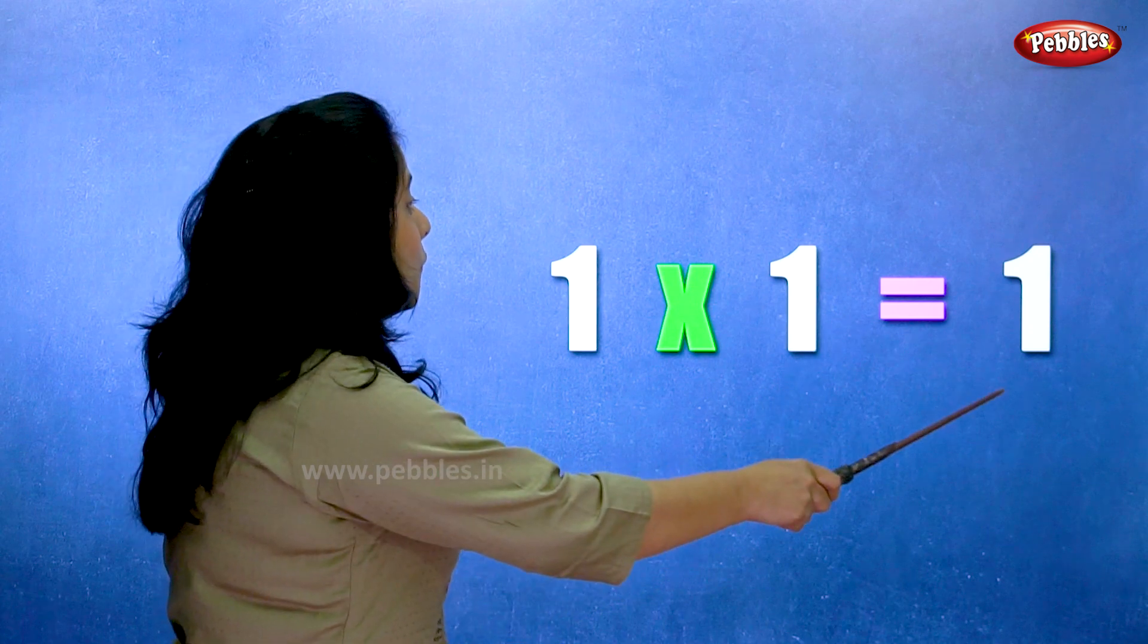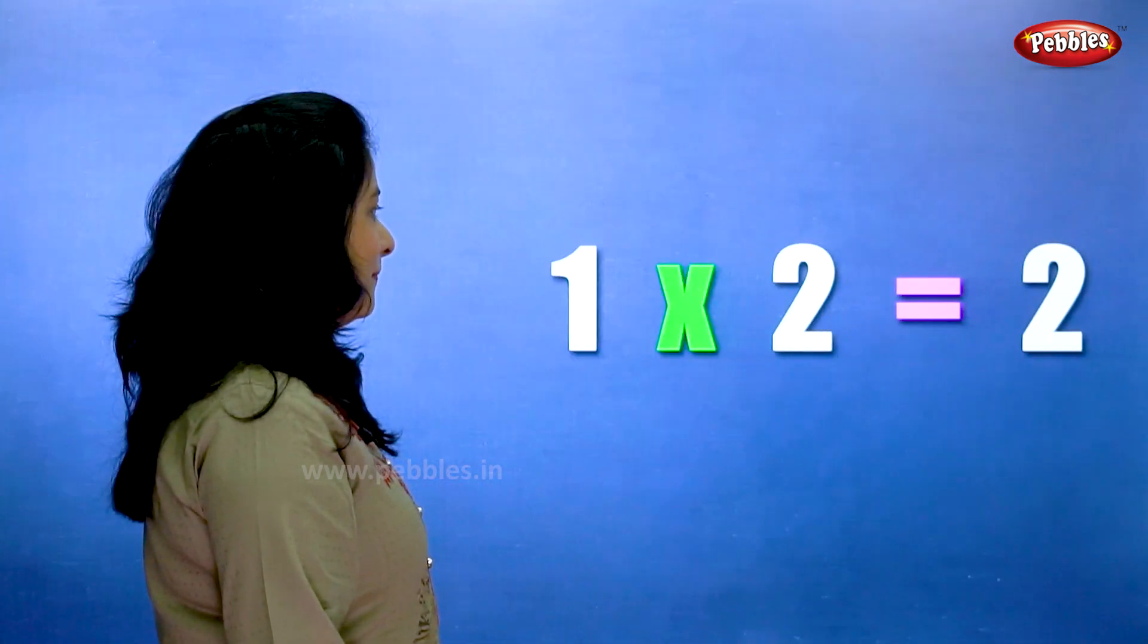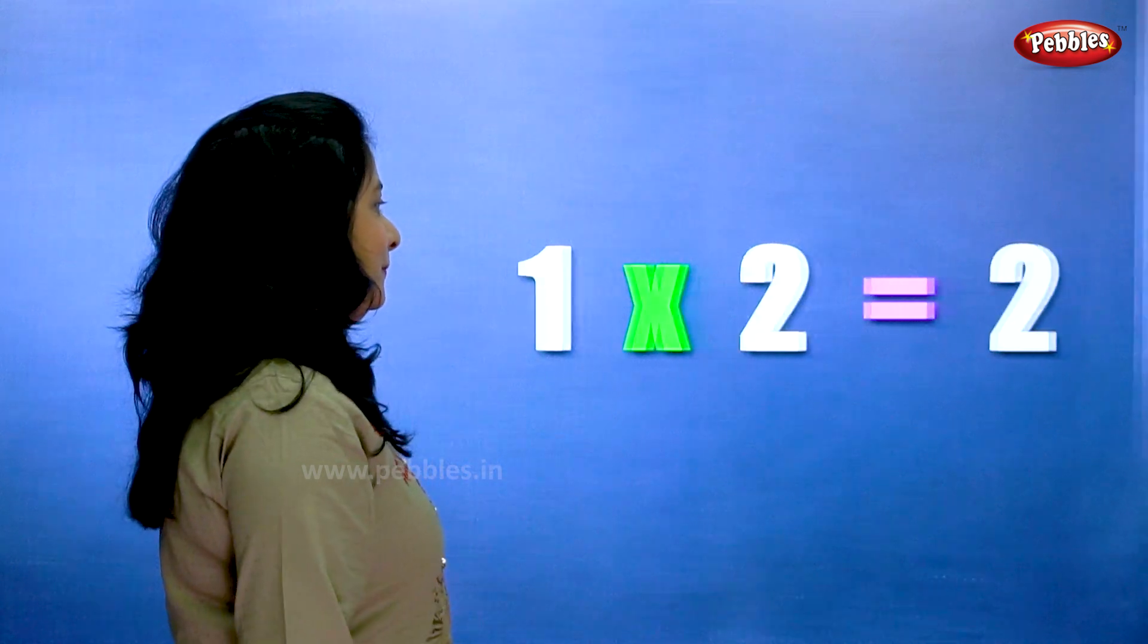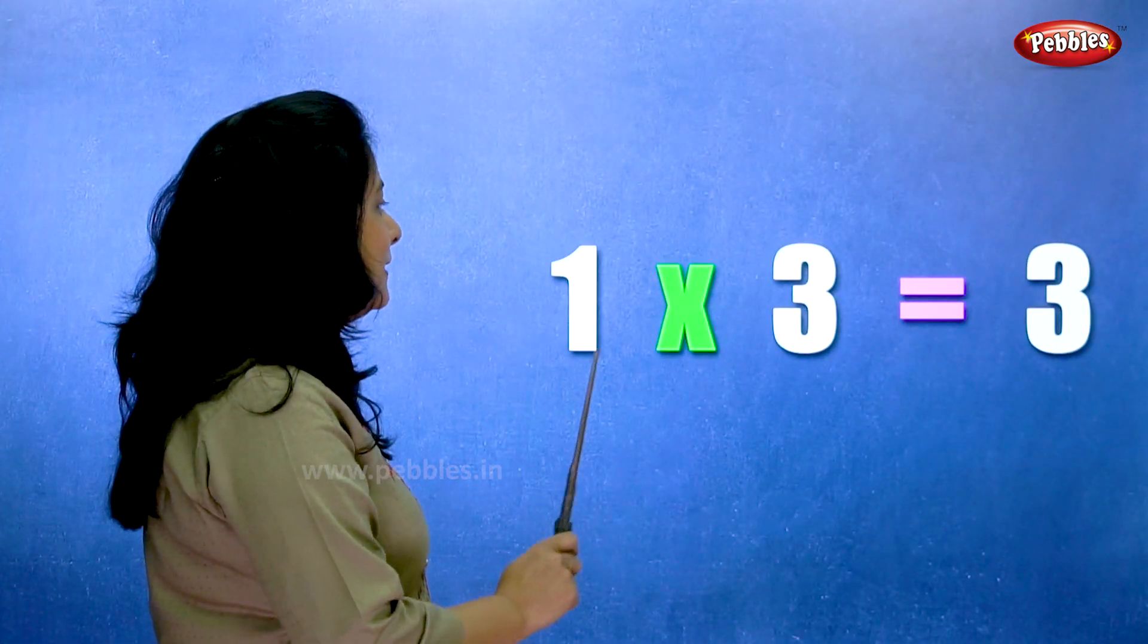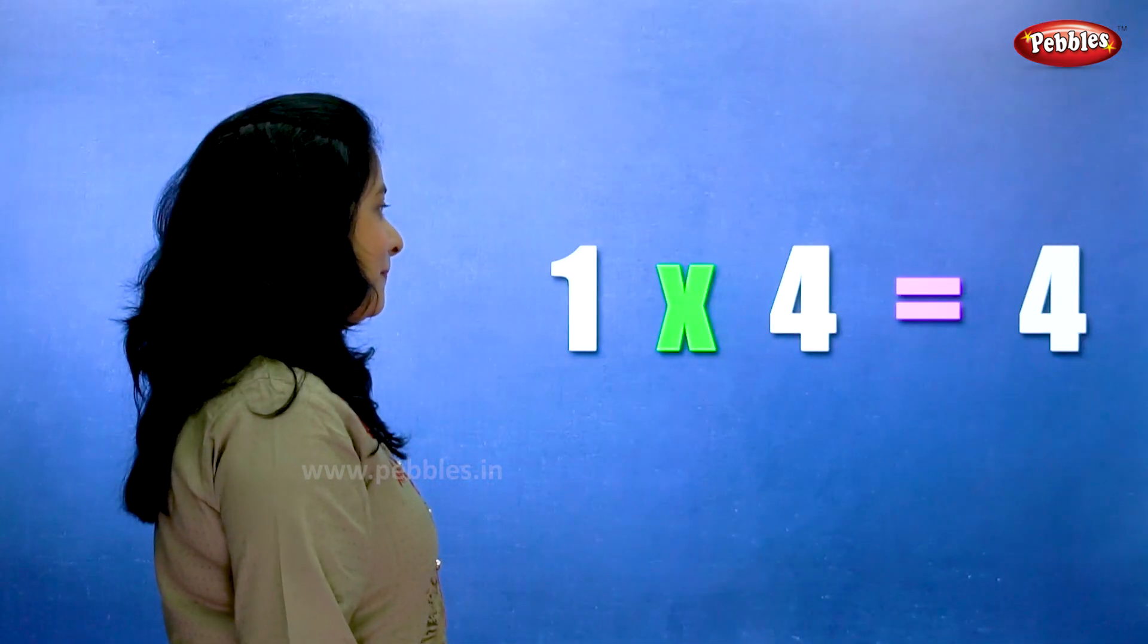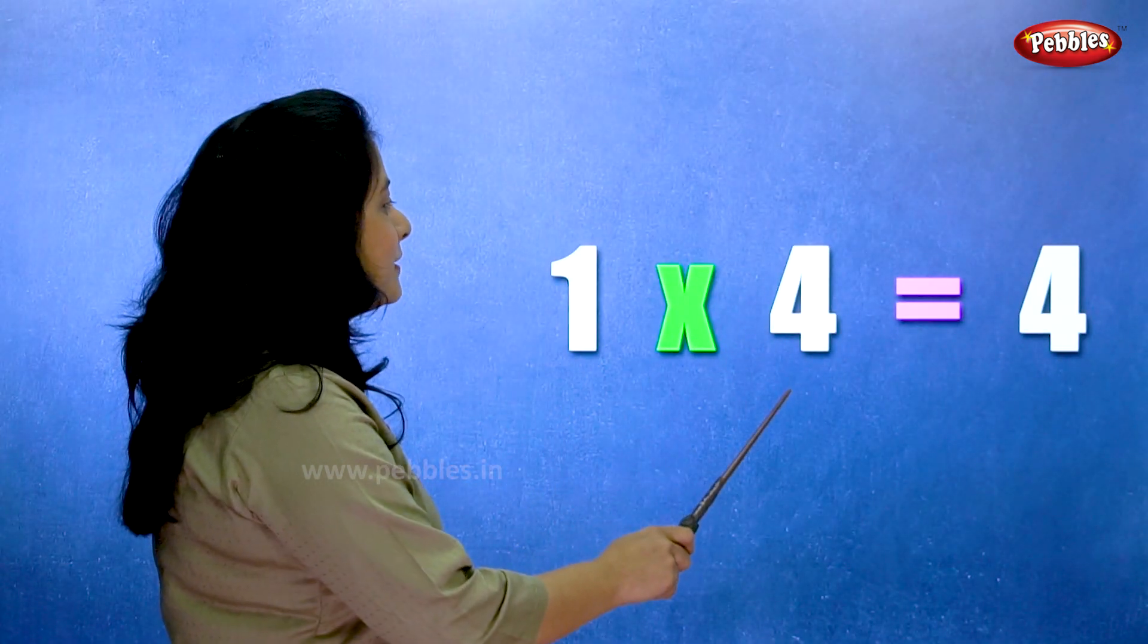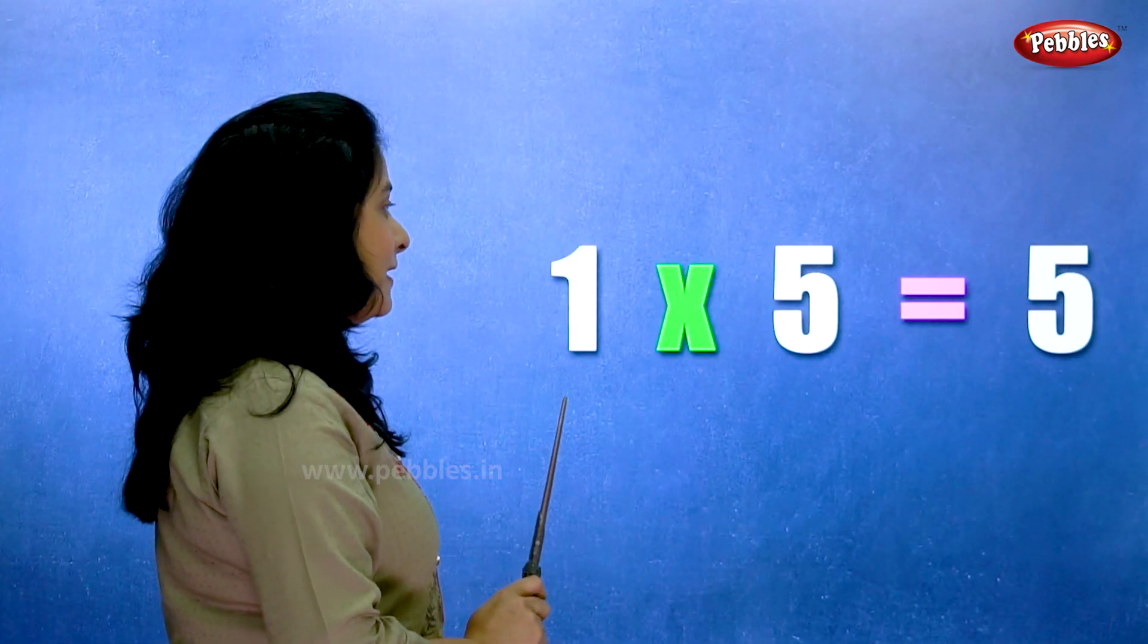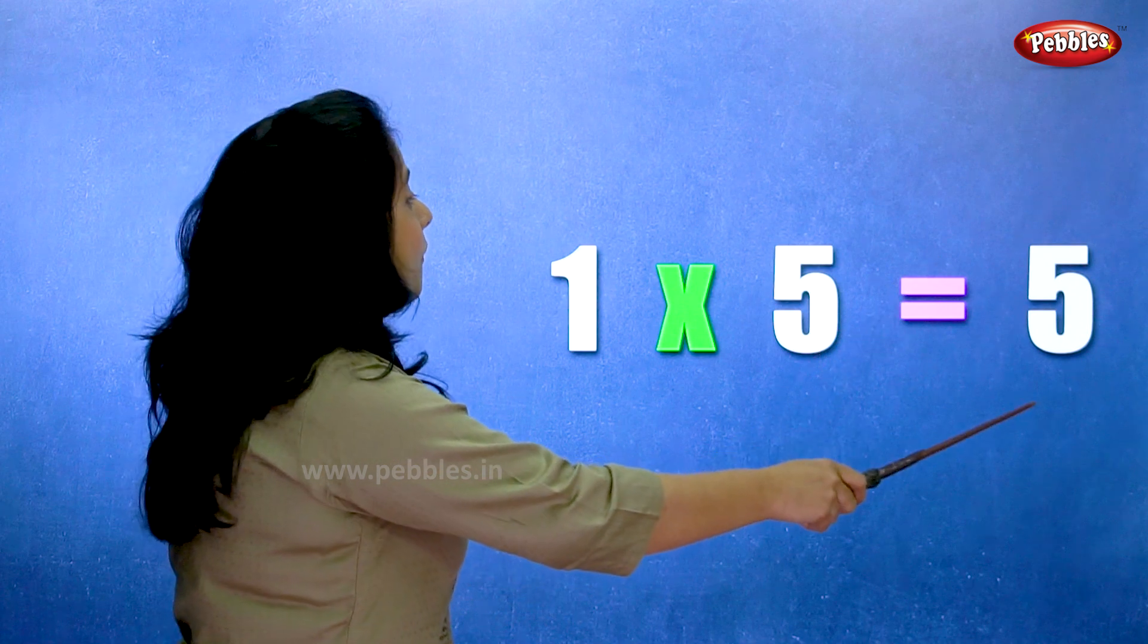1 1s are 1. 1 2s are 2. 1 3s are 3. 1 4s are 4. 1 5s are 5.